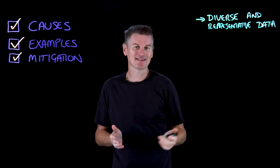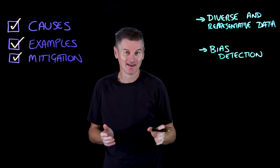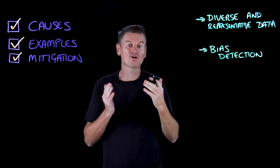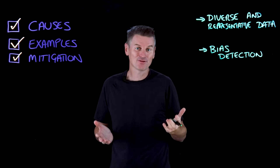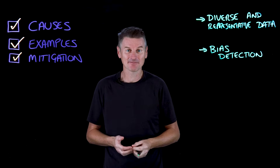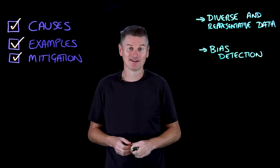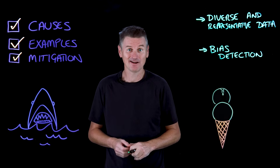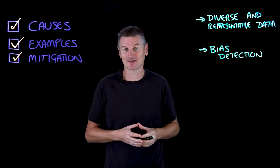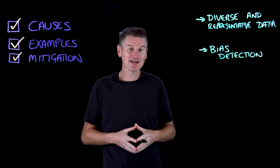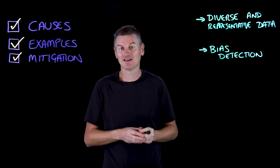There should also be a system for ongoing bias detection that can detect and correct potential biases before they create problems — through initiatives like impact assessments, algorithmic auditing, and causation tests. Remember, sharks and ice cream. This is where human-in-the-loop processes can help, where recommendations are reviewed by humans before a decision is made final.